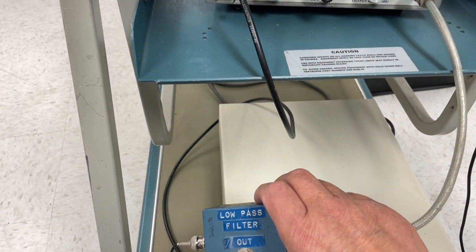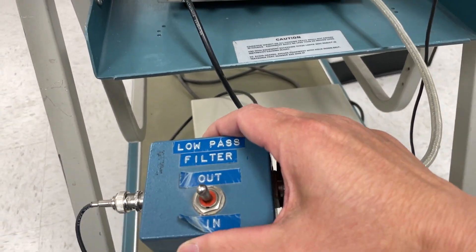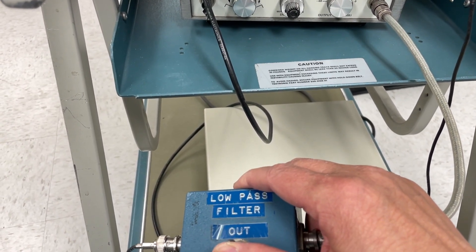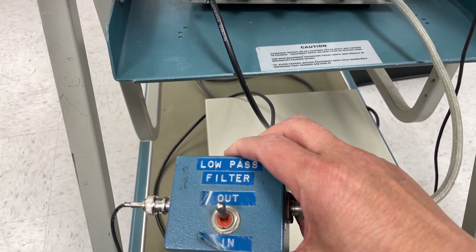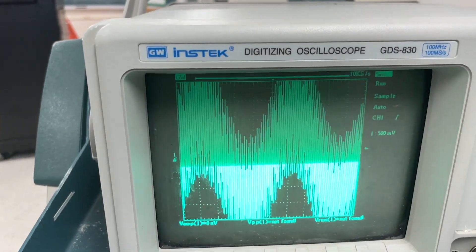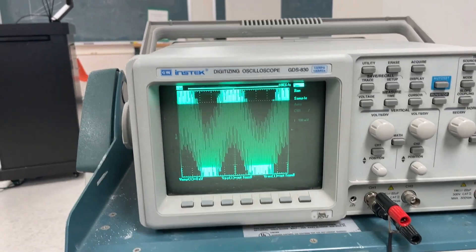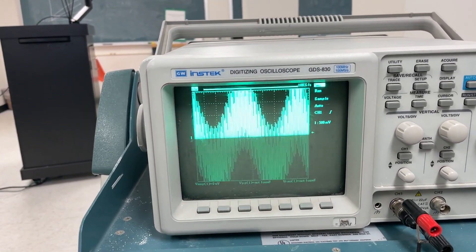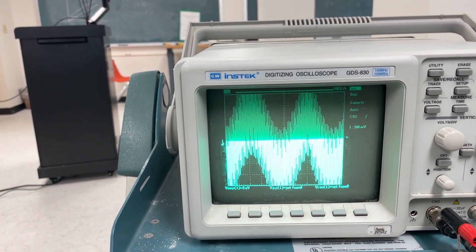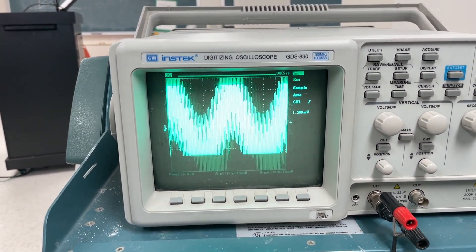So when I have the filter out, in other words the output from the two function generators, when I put it here out, it means that the filter is not engaged and the output I get is shown here. Basically you see this oscillation like a sine wave, but on top of that there are very fast oscillations.